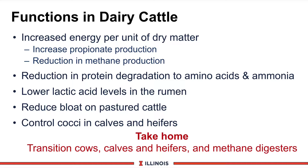Third, it will reduce lactic acid levels in the rumen — a real plus for rumen acidosis. If cattle are on pasture, it will reduce bloat, which is a real advantage. And finally, it will control coccidiosis in calves and heifers and improve their performance. The take-home message: there are lots of places for rumensin in dairy rations — for the transition cow, lactating cows, calves and heifers, and even methane digesters.